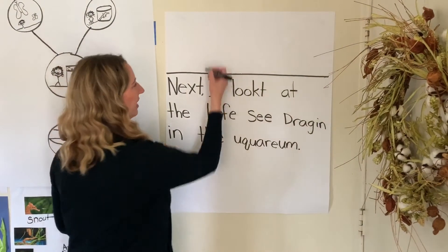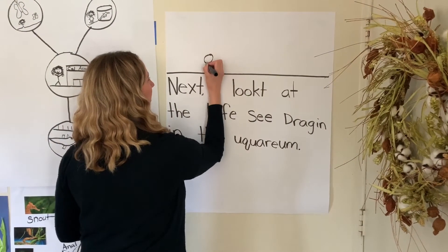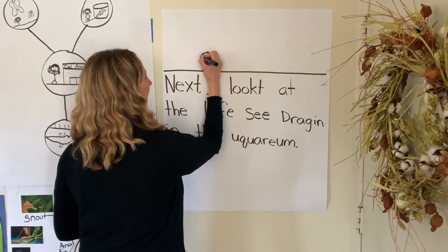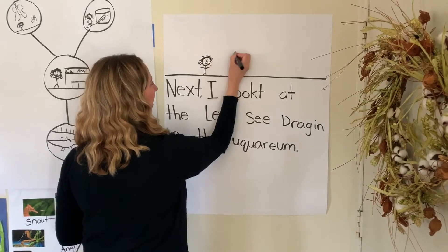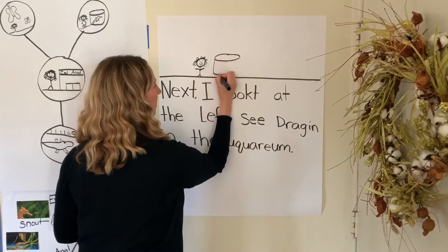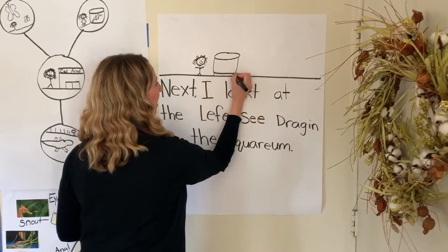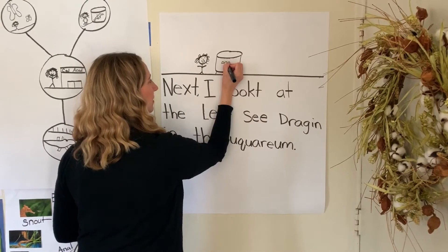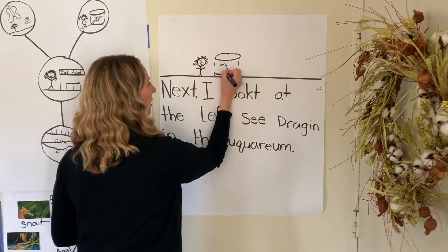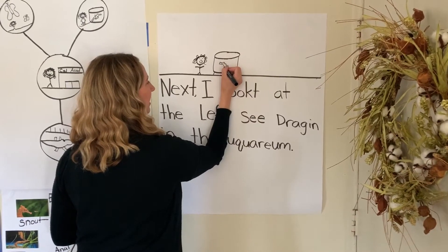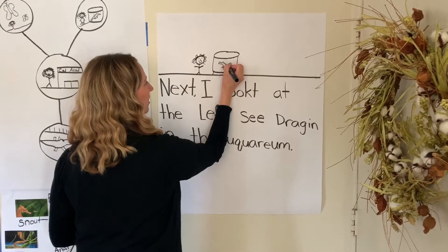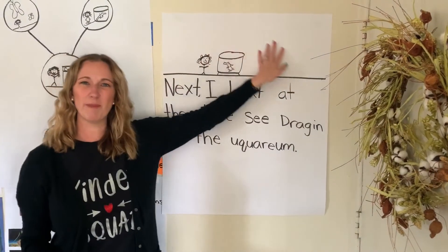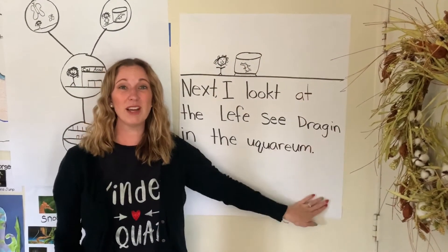Let's read the sentence: 'Next, I looked at the leafy sea dragon in the aquarium.' Remember your picture should be very colorful and should match your writing, so make sure you're drawing what it is that you wrote about. Here's my leafy sea dragon — he's so long and interesting-shaped because he looks like a leaf, like a branch of leaves. I'll take some time and add more to the picture later, but let's move on to writing the last part of our story.